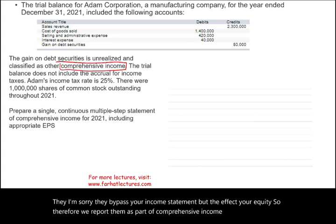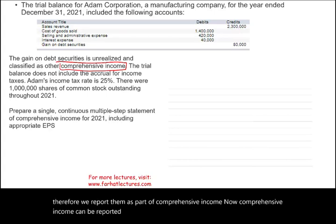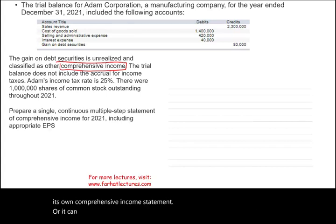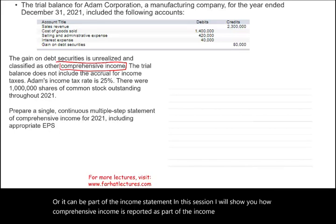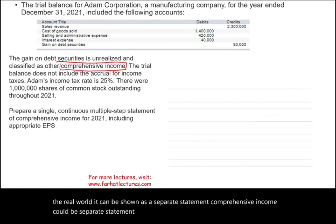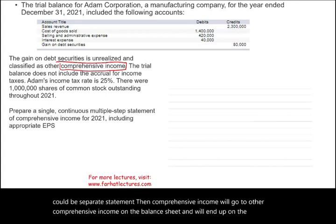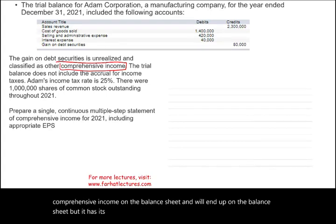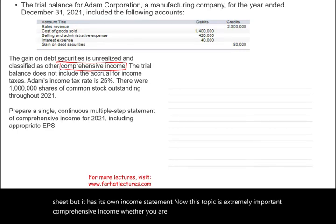Comprehensive income can be reported separately — it could have its own comprehensive income statement — or it can be part of the income statement. In this session, I will show you how comprehensive income is reported as part of the income statement, although in the real world it can be shown as a separate statement. Comprehensive income will go to other comprehensive income on the balance sheet. This topic is extremely important, whether you are an accounting student or a CPA candidate.